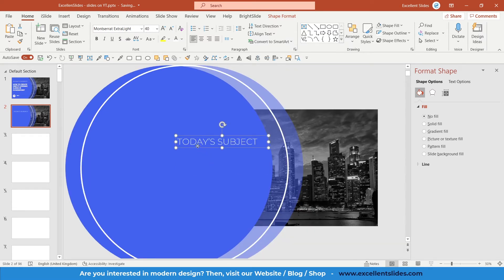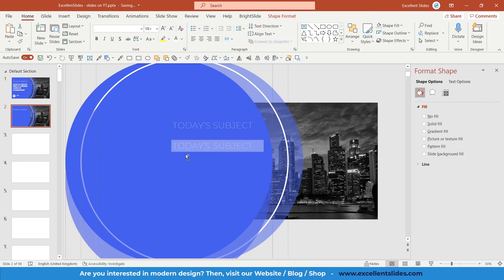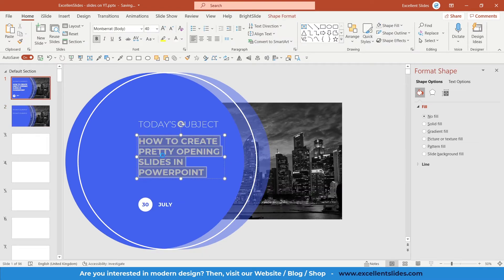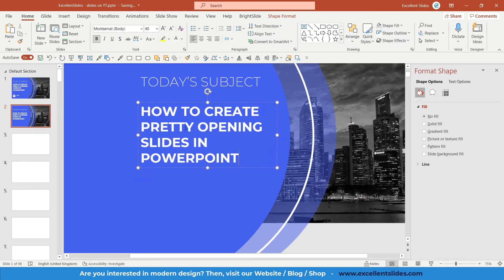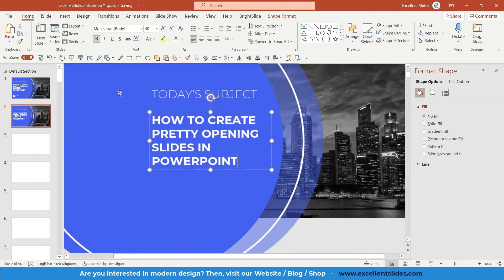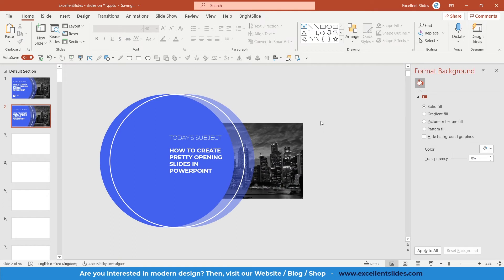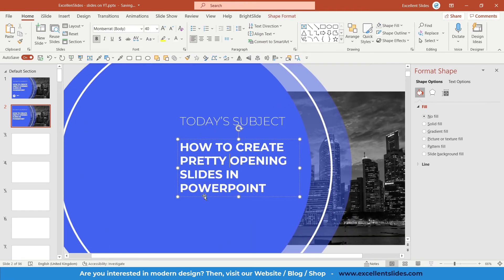The next thing is to insert the title of the slide — for example, 'How to Create Pretty Opening Slides in PowerPoint.' Use Ctrl+Shift and drag the text box to duplicate it below, then paste the subject text. Let's preview where those text boxes are placed — there's a little space on the left which looks quite cool, so we'll place it up a little bit.